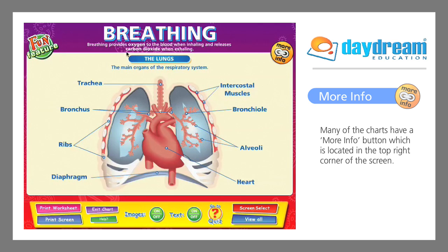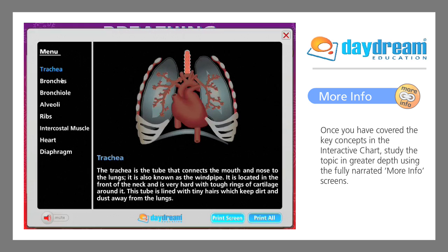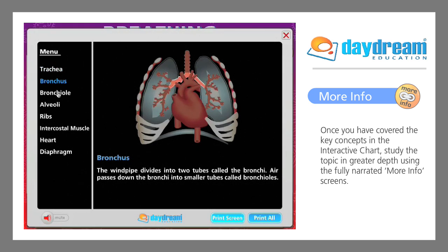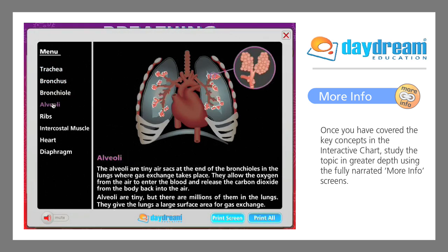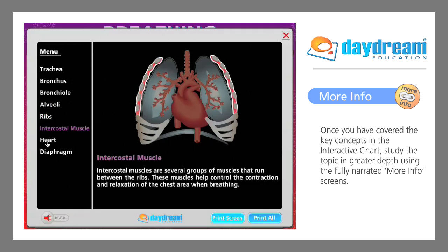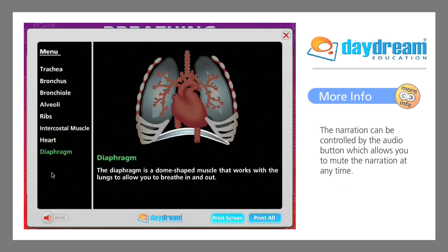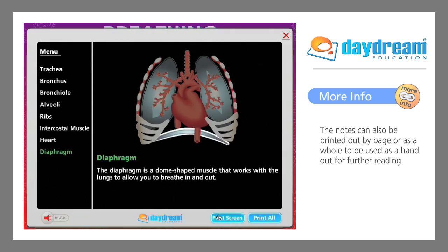Many of the charts have a More Info button which is located in the top right corner of the screen. Once you have covered the key concepts in the interactive chart, study the topic in greater depth using the fully narrated More Info screens. The narration can be controlled by the Audio button which allows you to mute the narration at any time. The notes can also be printed out by page or as a whole to be used as a handout for further reading.